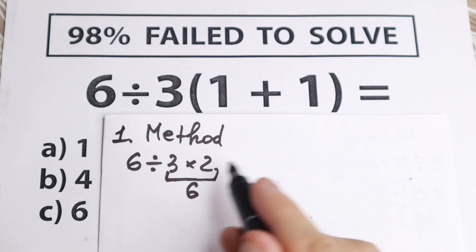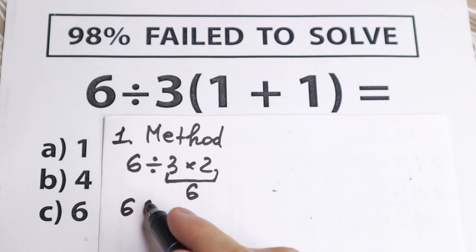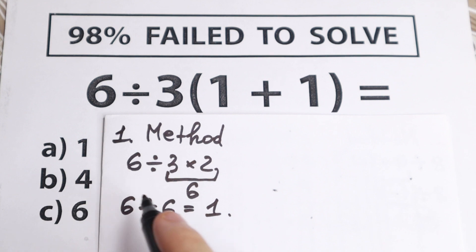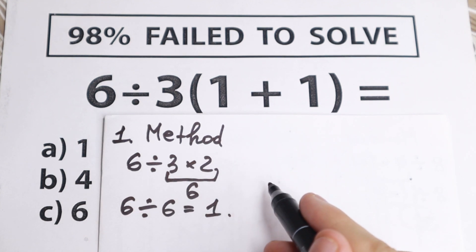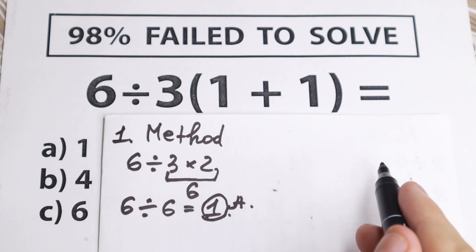And the last step, we multiply it right here, and we need to divide the first number 6, dividing by this 6, it is equal to 1. And we have this option right here, option a, we have this, this is option a, we solve it, it is equal to 1.